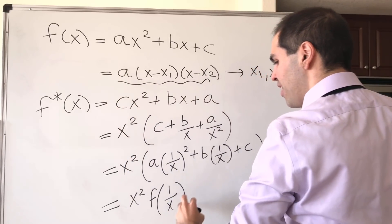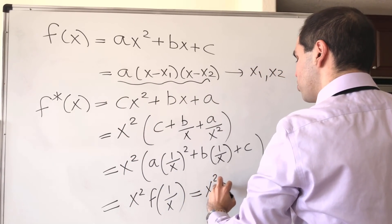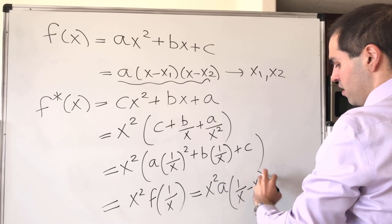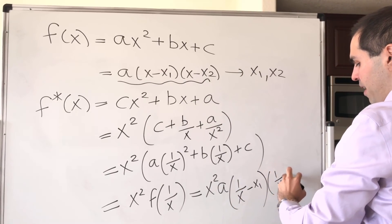x squared times f of 1 over x is x squared a times 1 over x minus x1 times 1 over x minus x2.